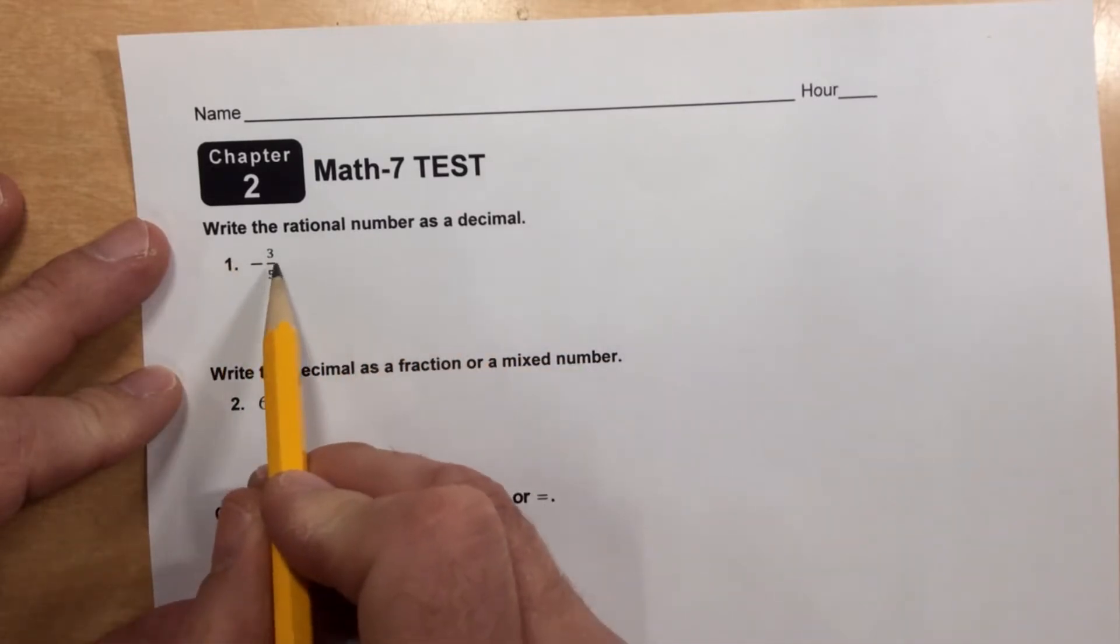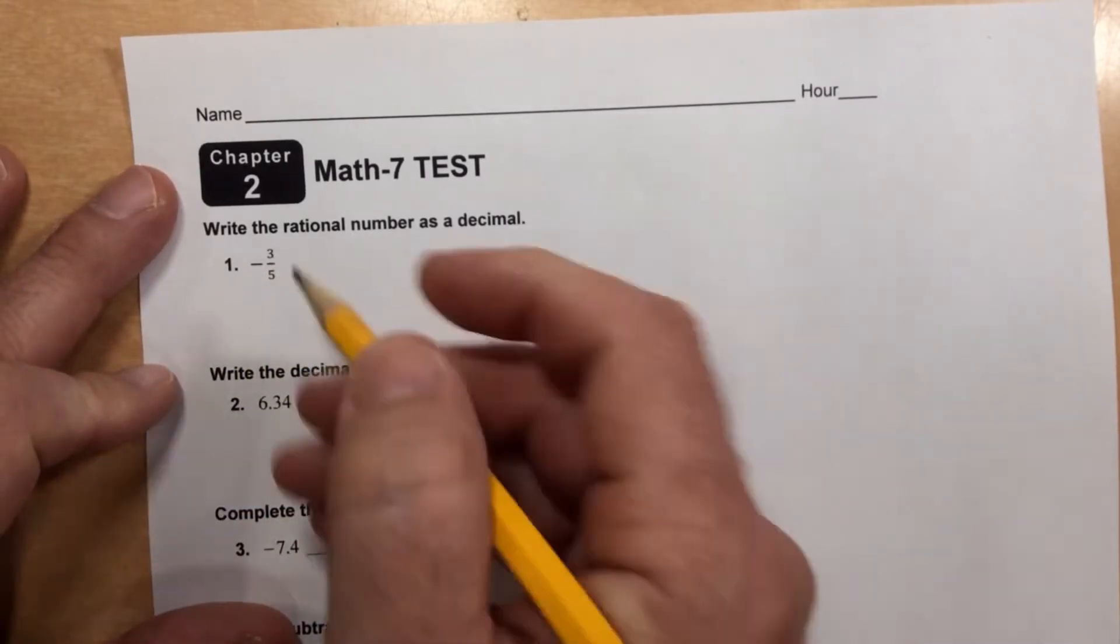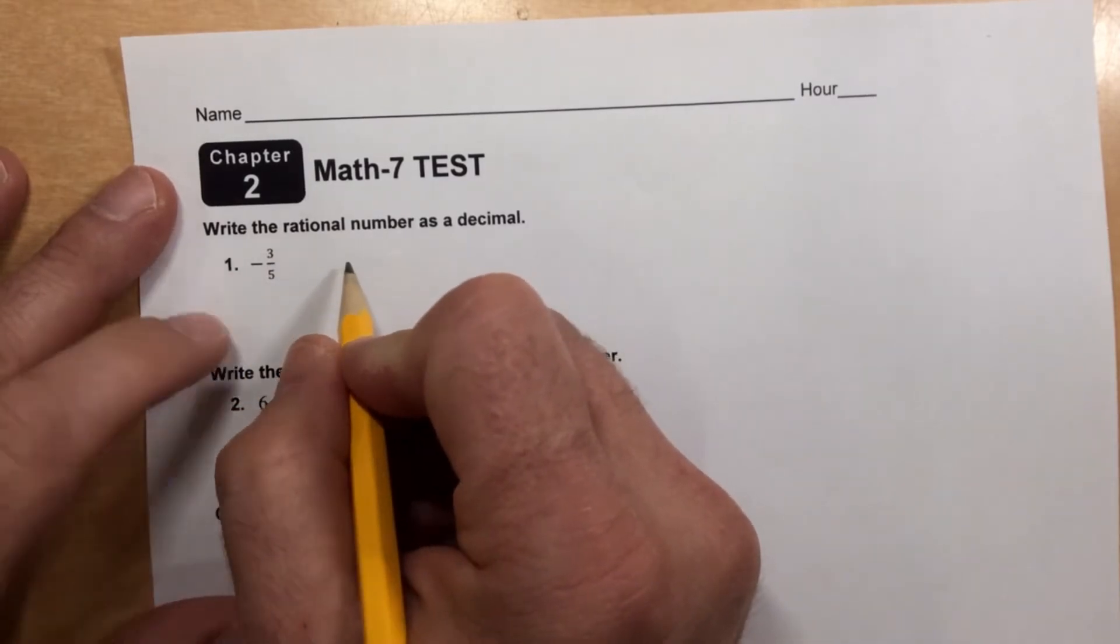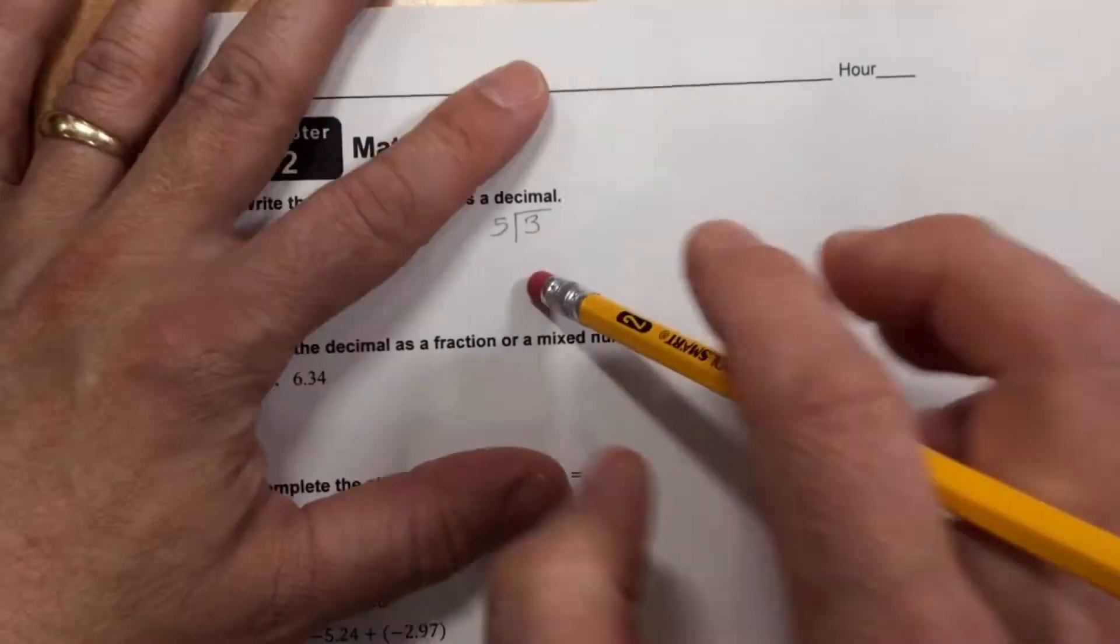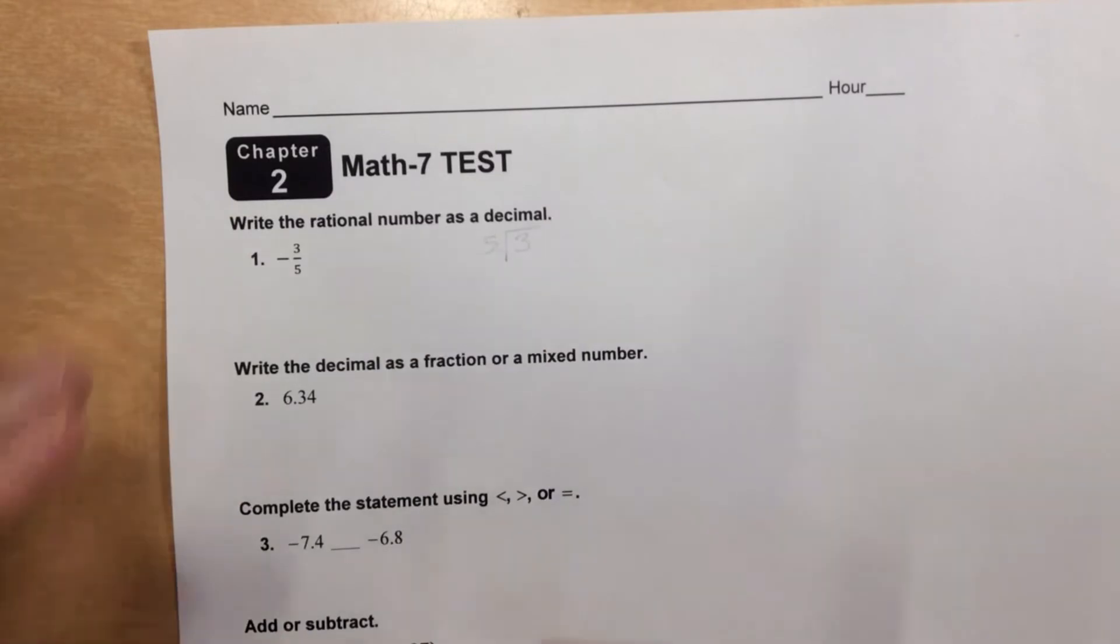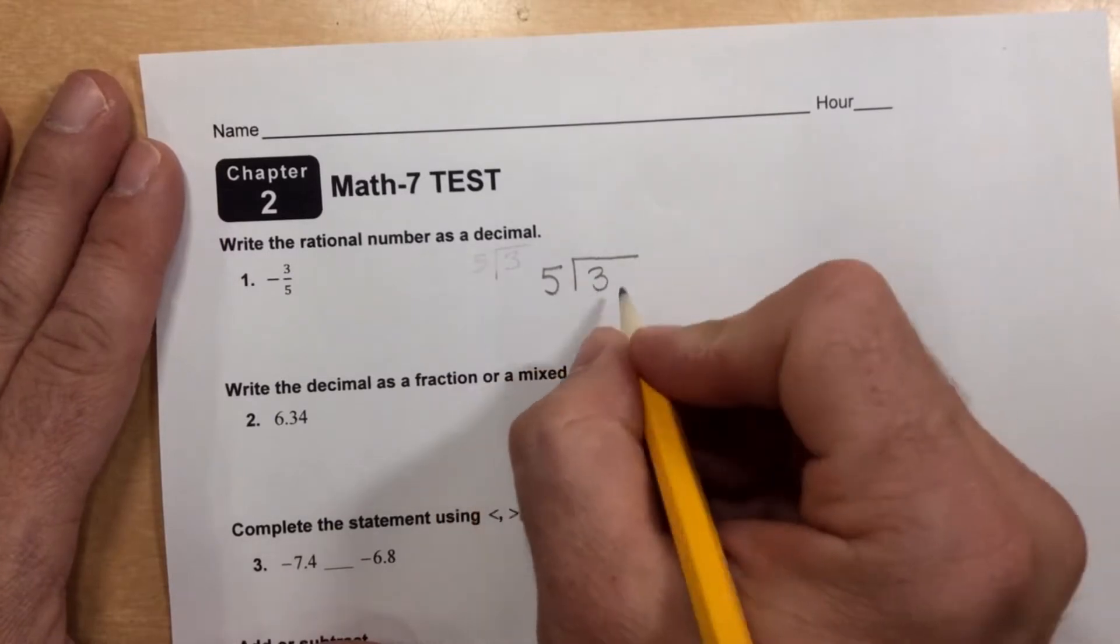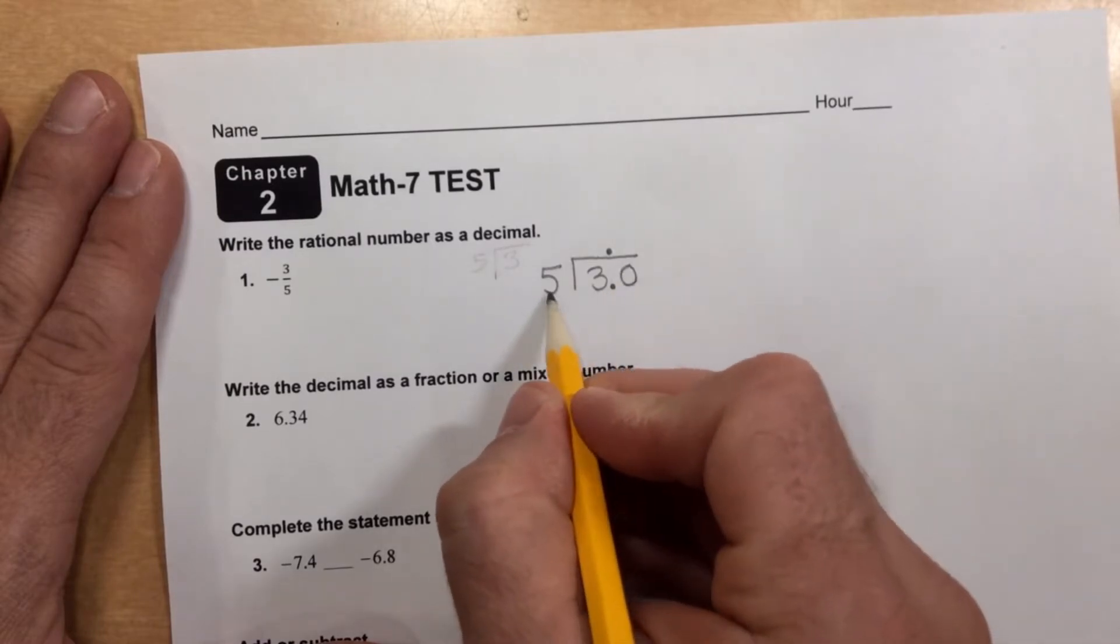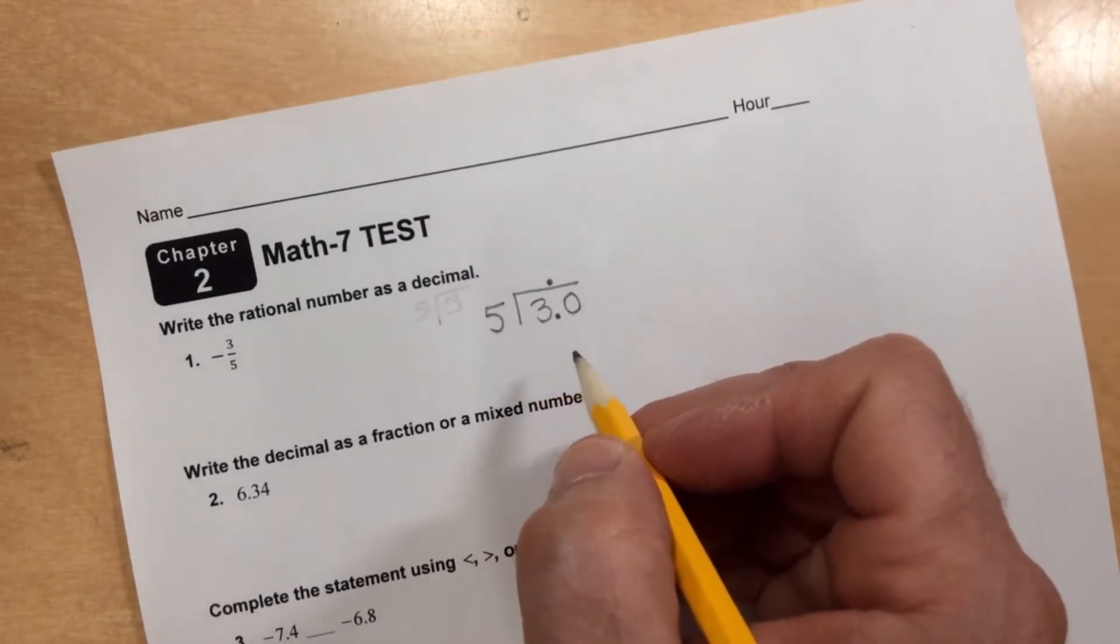Write the rational number as a decimal. Well, remember to write a fraction as a decimal, it's top divided by bottom. And because it's a negative fraction, it better be a negative decimal if they're going to be equal. So we can do, over here I'll do 3 divided by 5. That's a horrible placement, as I would not have any place for my quotient. 3 divided by 5. Well, 5 of course cannot go into 3, but as long as I just put a decimal and annex a 0, 5 goes into 30. I'll let you wrap that problem up.